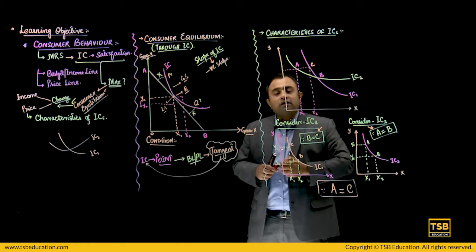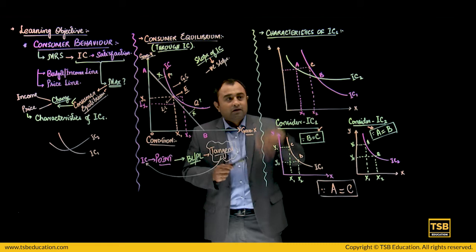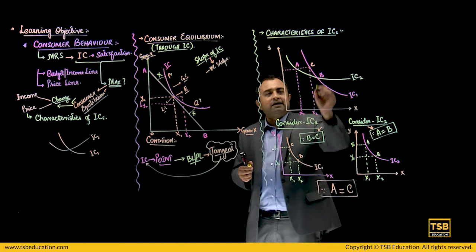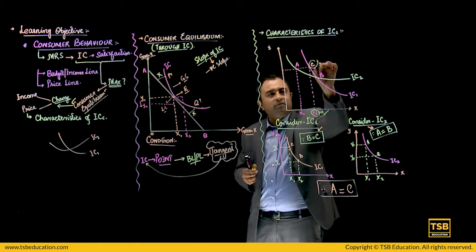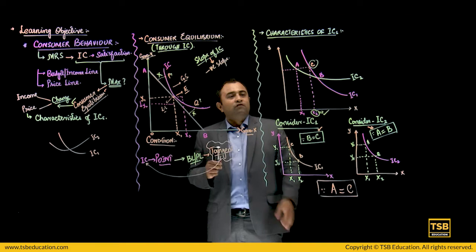तो consumer कहां पे खुश होगा? क्या a ले ले या c ले ले बराबर है उसके लिए? इधर तो यह दिख रहा है कि यह बराबर नहीं है. Consumer ultimately वहां जहां मुझे ज्यादा मिल रहा है, वहां पे खुश होगा. यानि कि consumer will be more happy consuming the quantity of point c rather than point a.